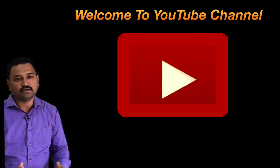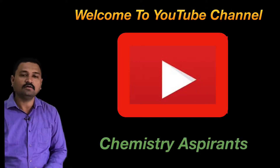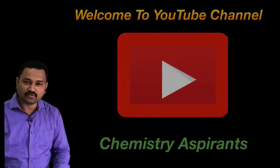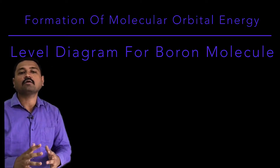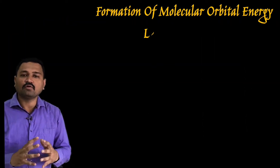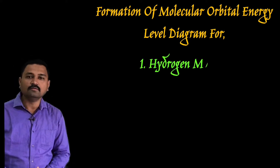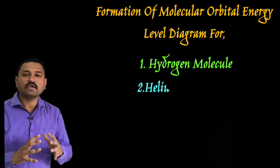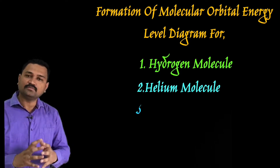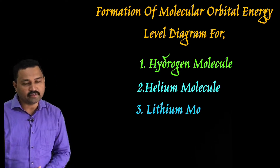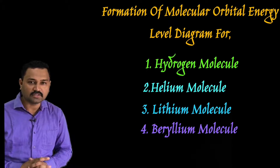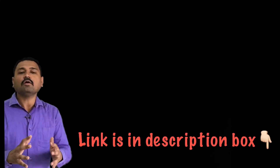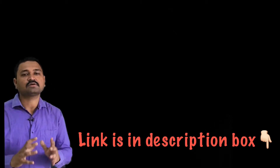Hello dear friends, welcome back to my YouTube channel Chemistry Aspirant. In today's lecture we are going to learn about the formation of molecular orbital energy level diagram for boron molecule. In the previous lecture we already learned the formation of hydrogen molecule, helium molecule, lithium molecule, and beryllium molecule by using molecular orbital theory concept. Links to all those videos are given in the description box.